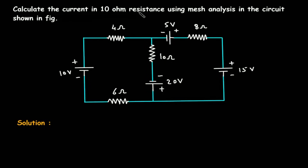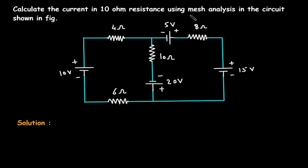Calculate the current in the 10 ohm resistance using mesh analysis in the circuit shown in the figure. We have to find the current through this 10 ohm resistance using mesh analysis.